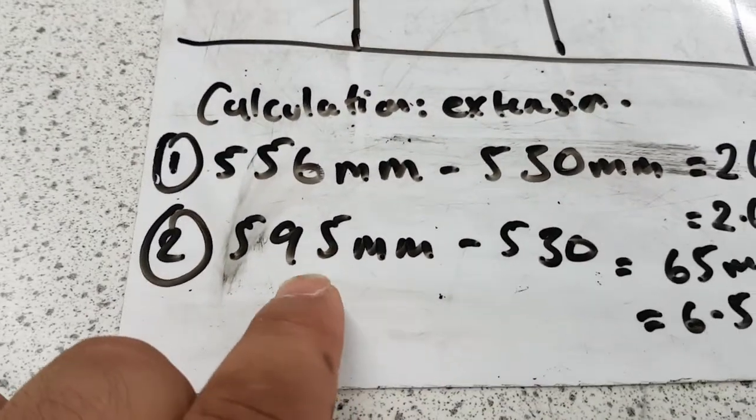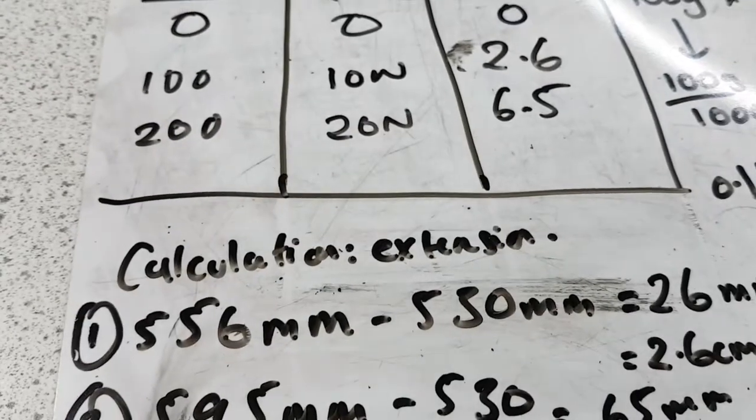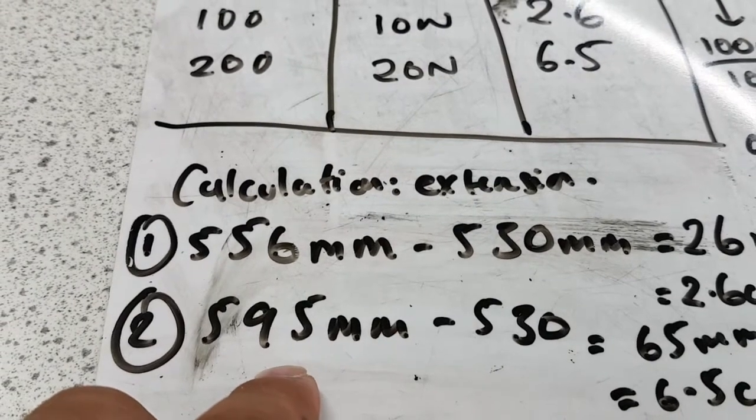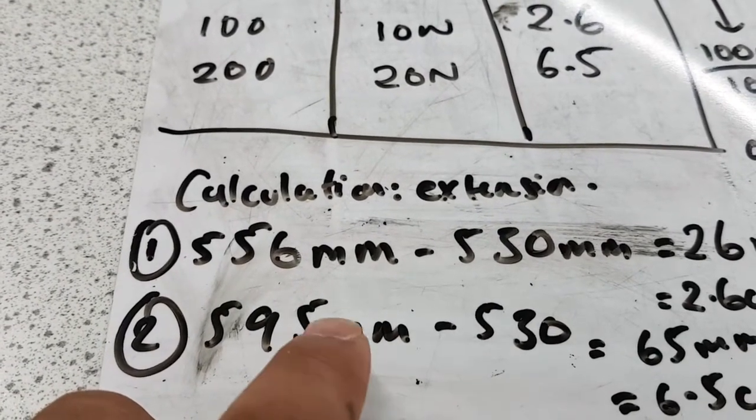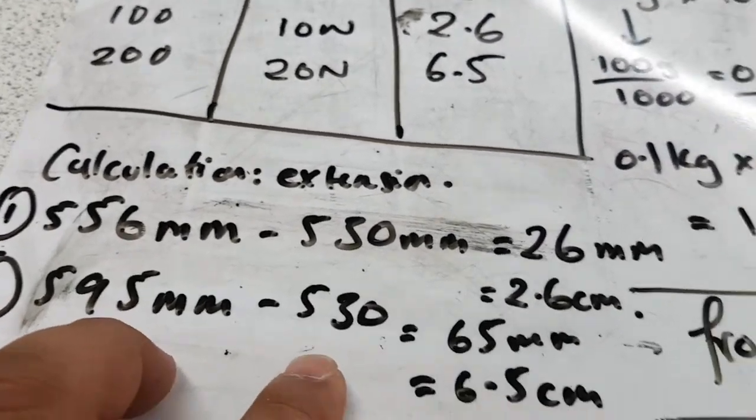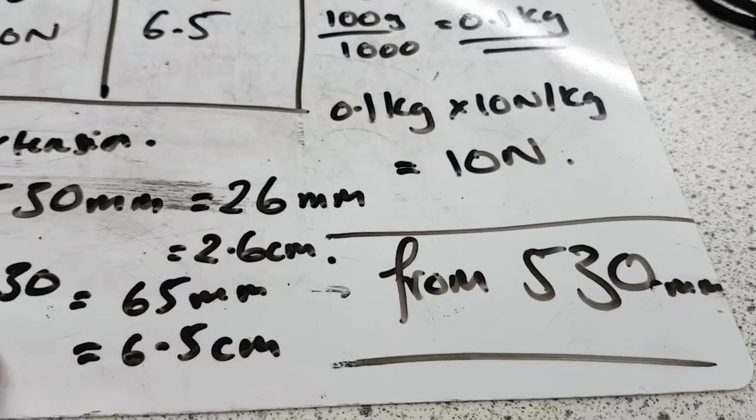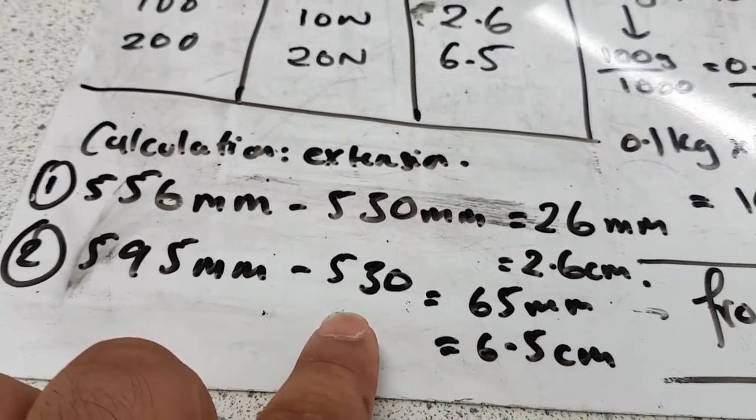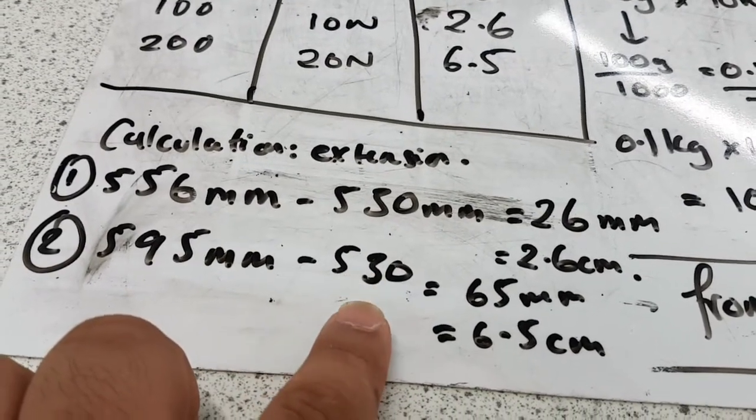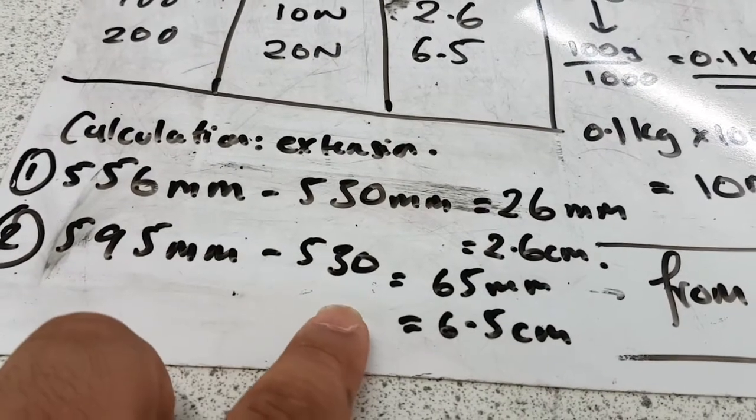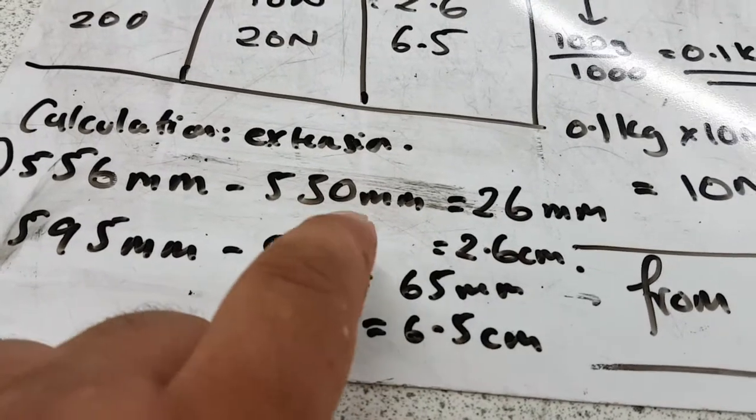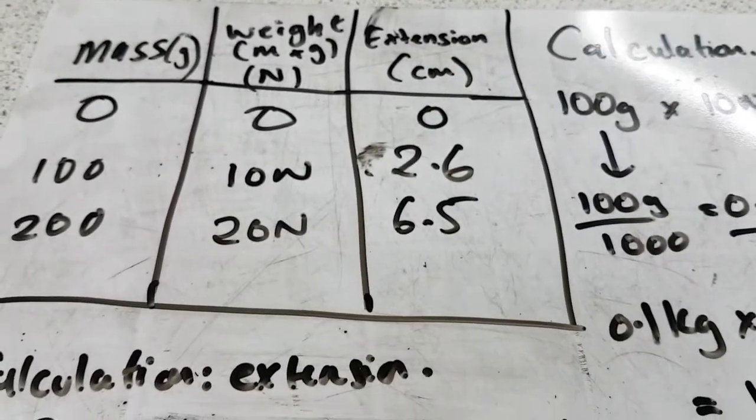When I added the 200 grams, I added another 100 to make it 200. It went to 595 millimeters. That's where it stopped to, where I read from the bottom of the spring. My original point was 530. So to work out how much it extended by from the original, it's 595 millimeters take away 530 millimeters, which is 65 millimeters. To get it into centimeters, you just divide the millimeters by 10. And that's it.